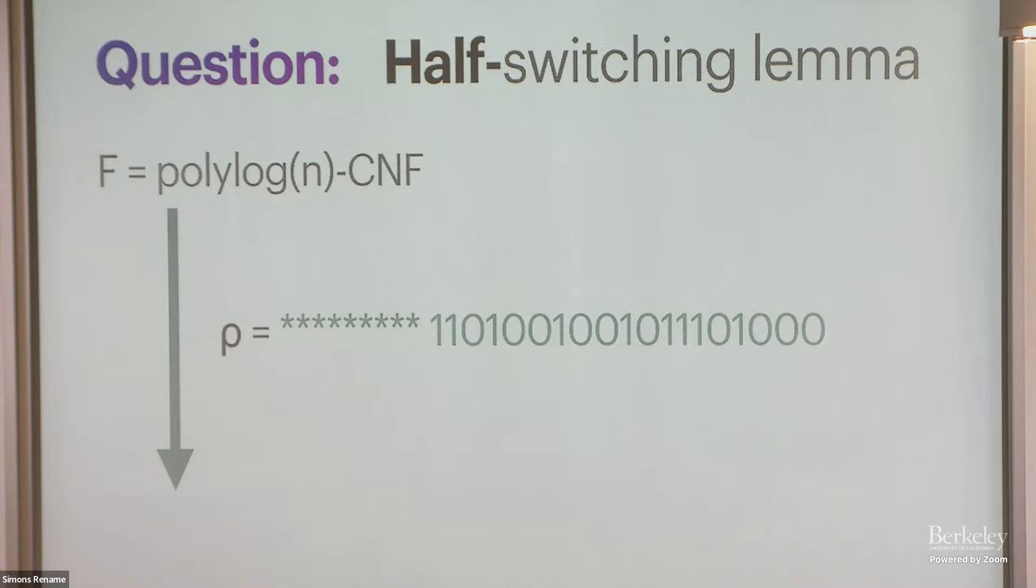What does a usual switching lemma say? So if you start with a low-width CNF and you hit it with a restriction. So I guess I'm looking at the restriction that leaves unset, let's say some like root n number of variables. So the stars are randomly chosen amongst the variables, and then for the rest of the variables, you just put in zeros and ones 50-50. So switching lemma and Håstad says that if you perform this restriction, then you're left with just a shallow decision tree. Okay, so this is classical stuff. I guess a good fraction of us has proved or used such methods.